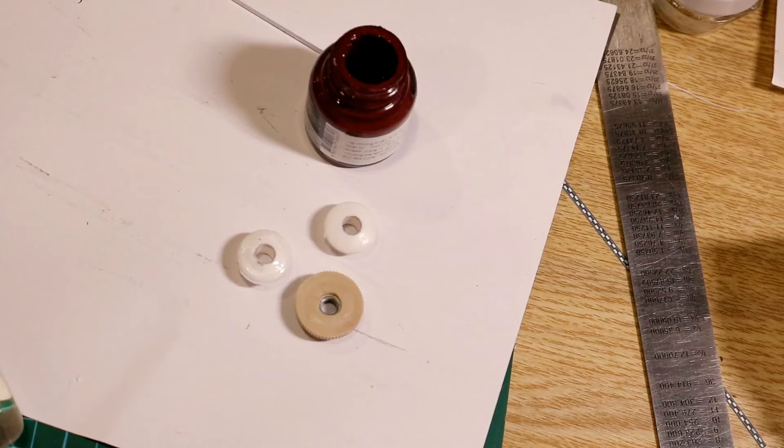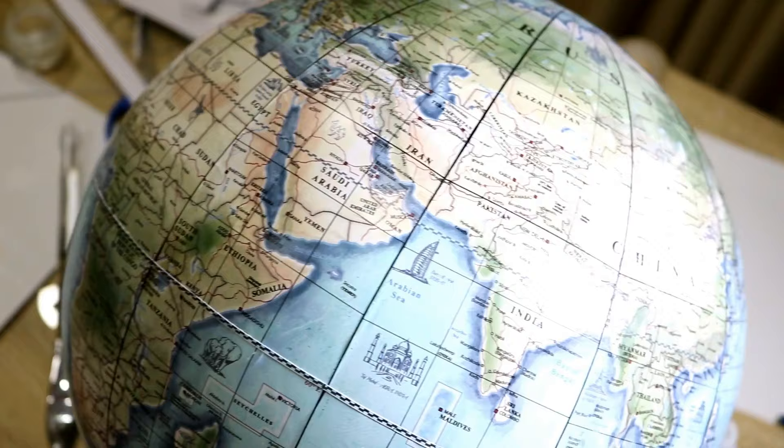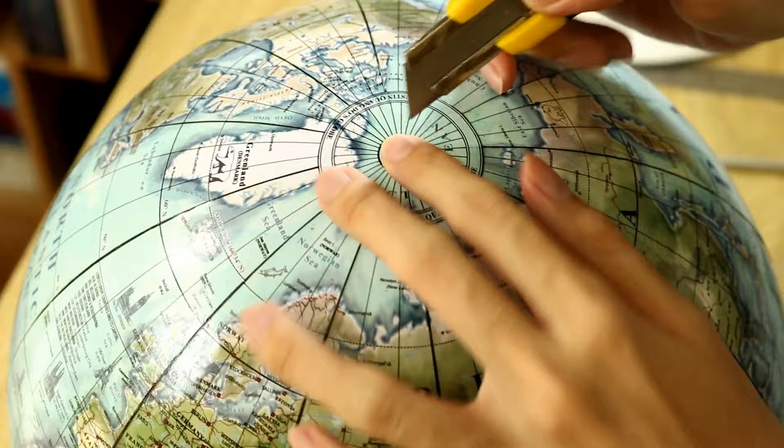Meanwhile, you should paint the pole knobs to match the wooden color. And this is the globe after the paint has dried. You can see how much glossier it is after the paint coat.